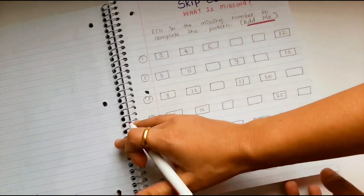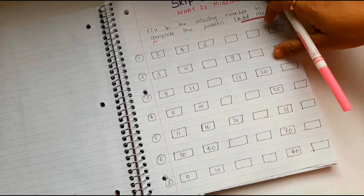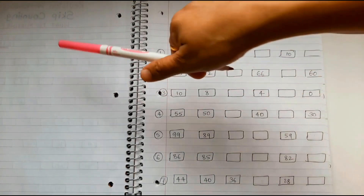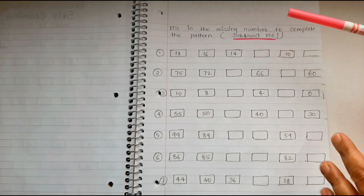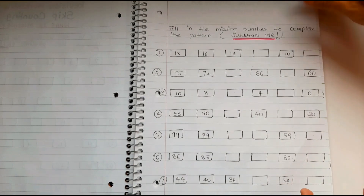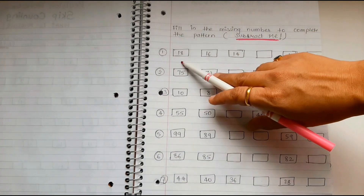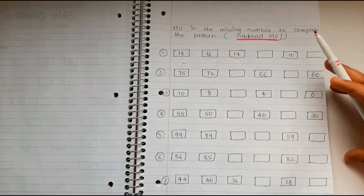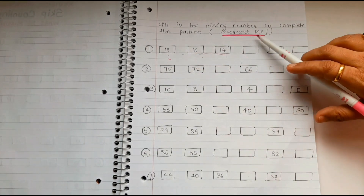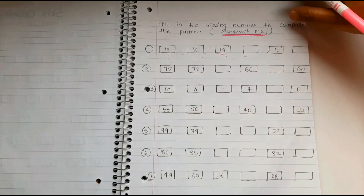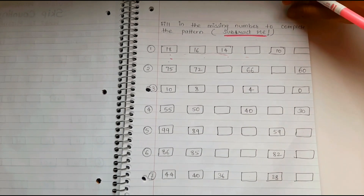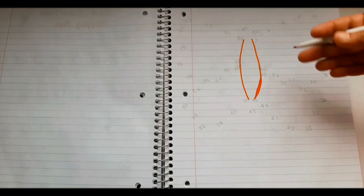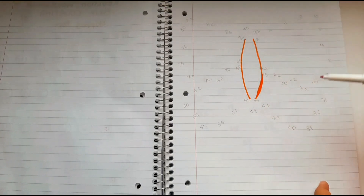With these two worksheets, 'Add Me' and 'Subtract Me,' she will also practice addition and subtraction. For example, fill in the missing number to complete the pattern. In 'Subtract Me,' I have given backward counting: 18, 16, 14 — she needs to count backward to complete the pattern. That covers subtraction. So addition and subtraction are both covered with these skip counting worksheets.